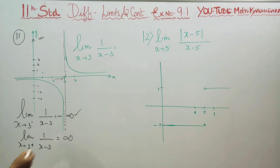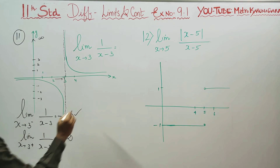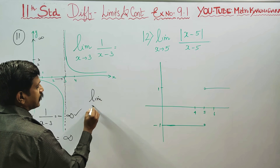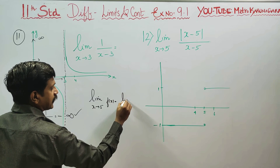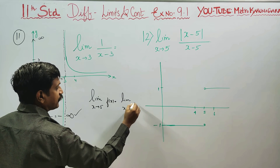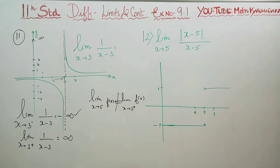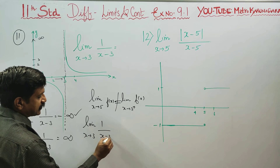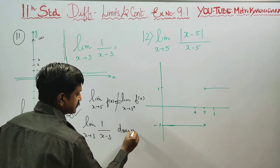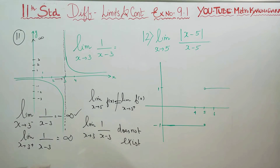Applying the one-sided limit: the left-hand limit of f(x) is not equal to the right-hand limit of f(x). Since left-hand limit is not equal to right-hand limit, the limit as x turns to 3 of 1 by (x minus 3) does not exist.